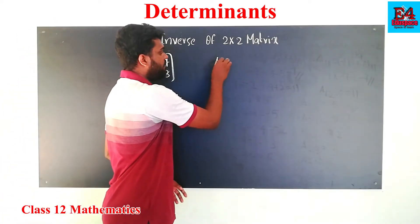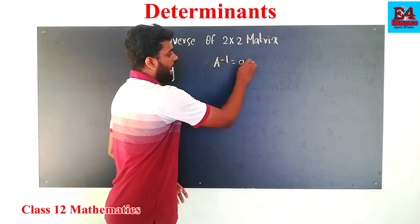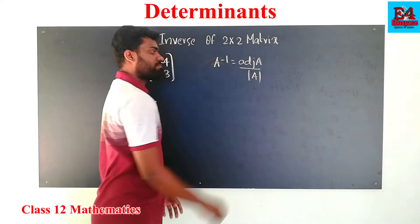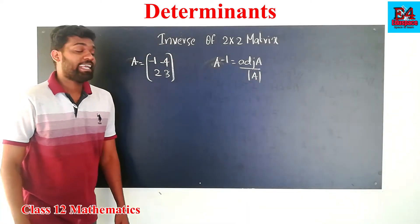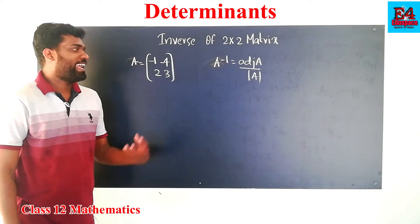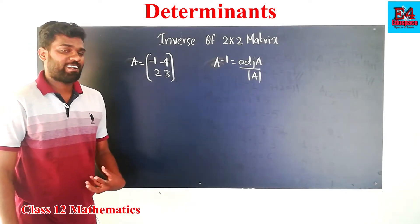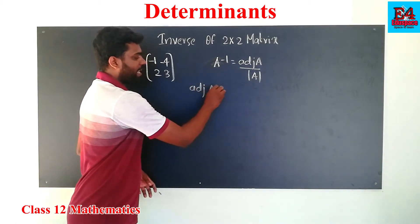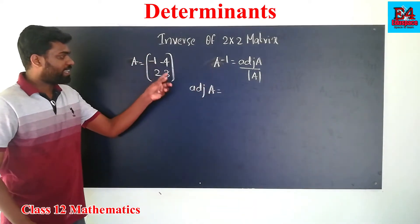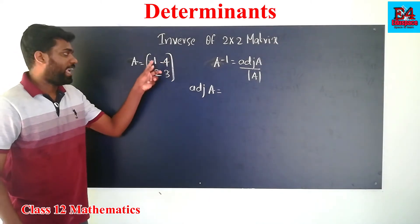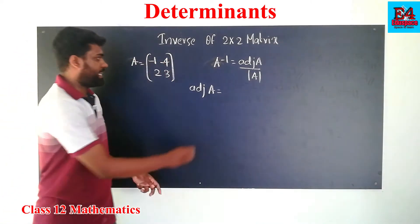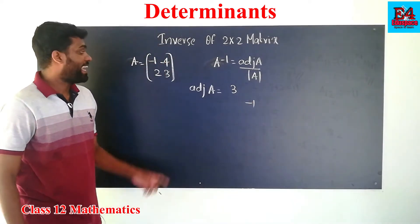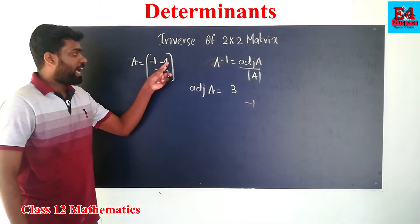A inverse is equal to the adjoint of A divided by the determinant of A. Now we need to find the adjoint of A.